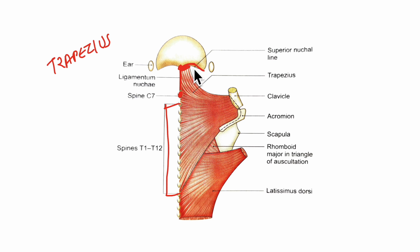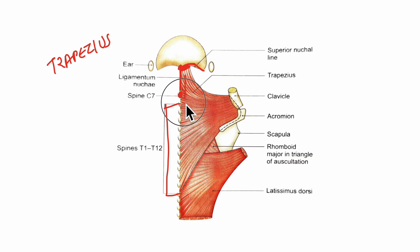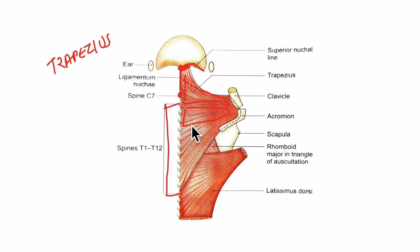So this is the entire origin of the trapezius muscle. Now let us look at the insertion of the trapezius. This muscle has three fibers — that is mainly the upper fibers, the middle fibers and the lower fibers.